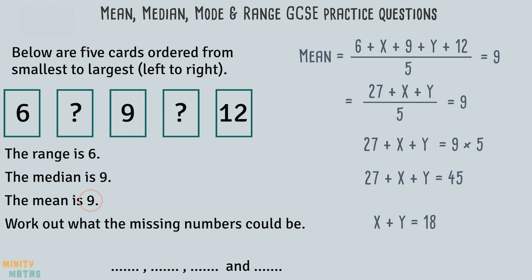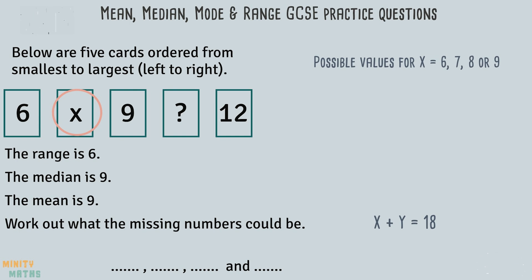We can use trial and error to find two numbers between 6 and 12 which add up to 18. The first missing value, which we have named x, could either be 6, 7, 8 or 9. The second missing value, which we have named y, could either be 9, 10, 11 or 12. Have a look at these numbers and see if any of these add up to exactly 18.